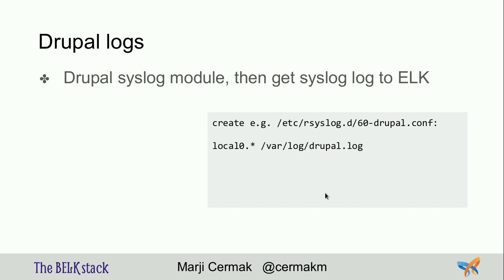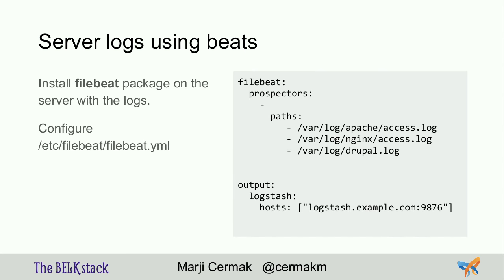For Drupal logs, the production way is using the core syslog module, which stores watchdog events on the local server syslog facility. I created a config file saying store these events into /var/log/drupal.log. Using the syslog module to write to a dedicated file, and then streaming that Drupal log file via Filebeat — save it first to syslog, syslog saves it as a file, and then Filebeat streams it to central Logstash.